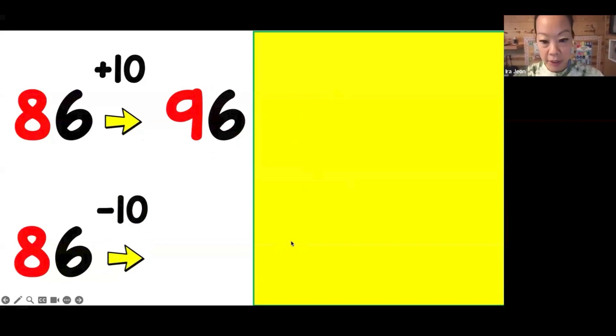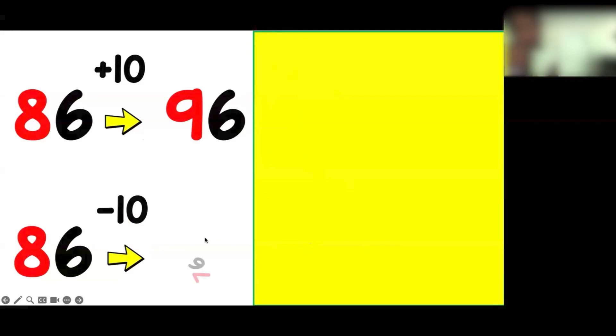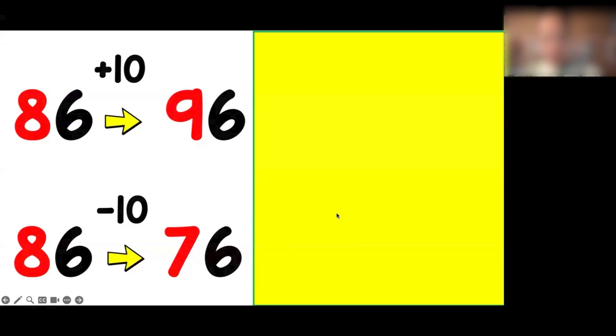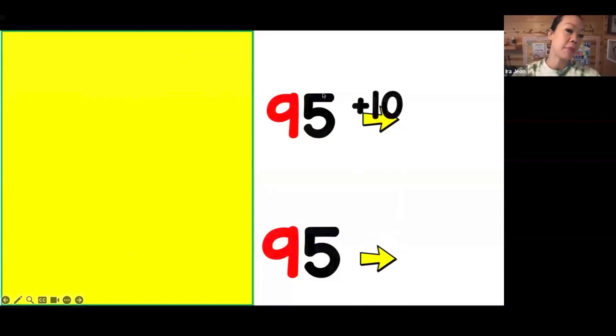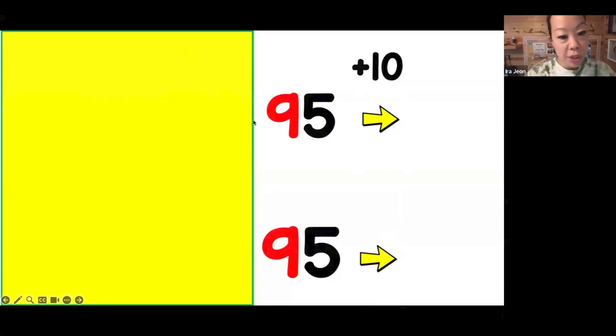You know what's coming next. What is 10 less than 86? Notbut, what would the number be? 76. Exactly. Now I have 95, so can you guys figure out 10 more than 95? That'll bring us into our three digit numbers, right?